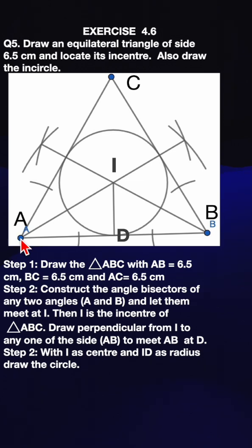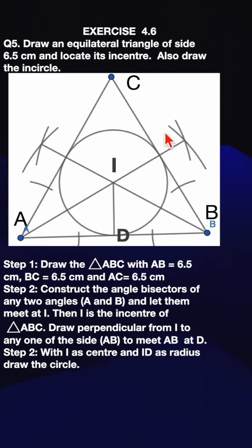Put the pointer at this point and draw one arc with the same length, then put the pointer here and draw another arc. Join this point of intersection with vertex A and you get the angle bisector of angle A. Similarly, you can do the same for angle B.